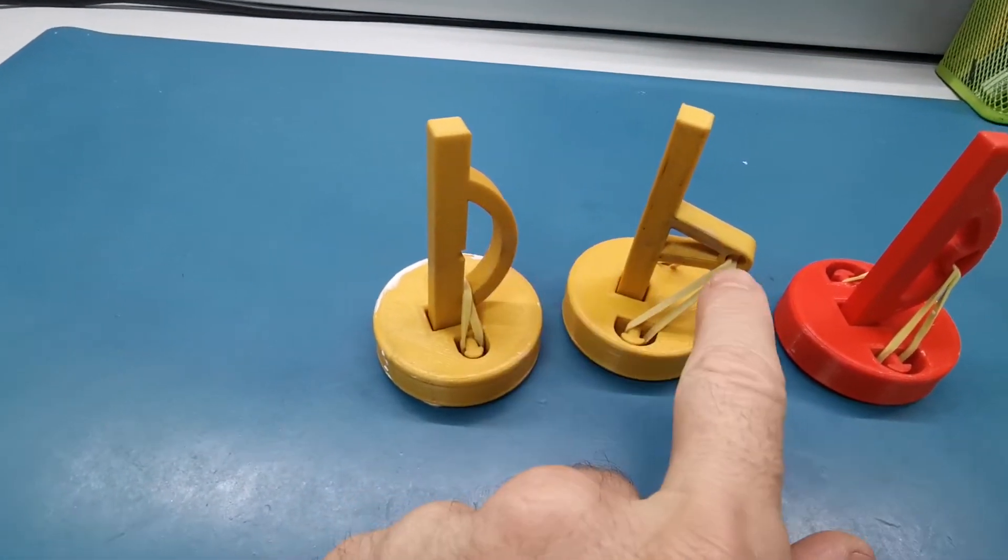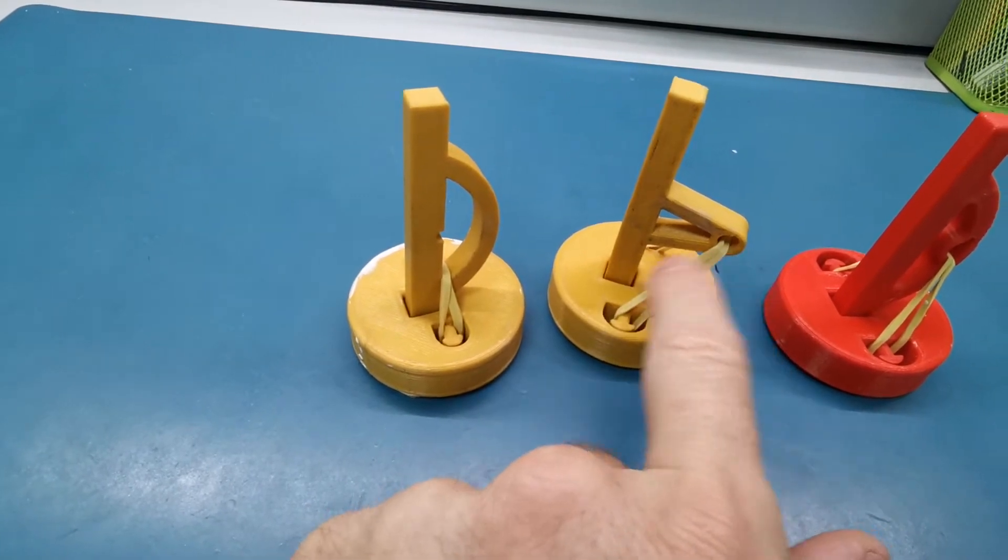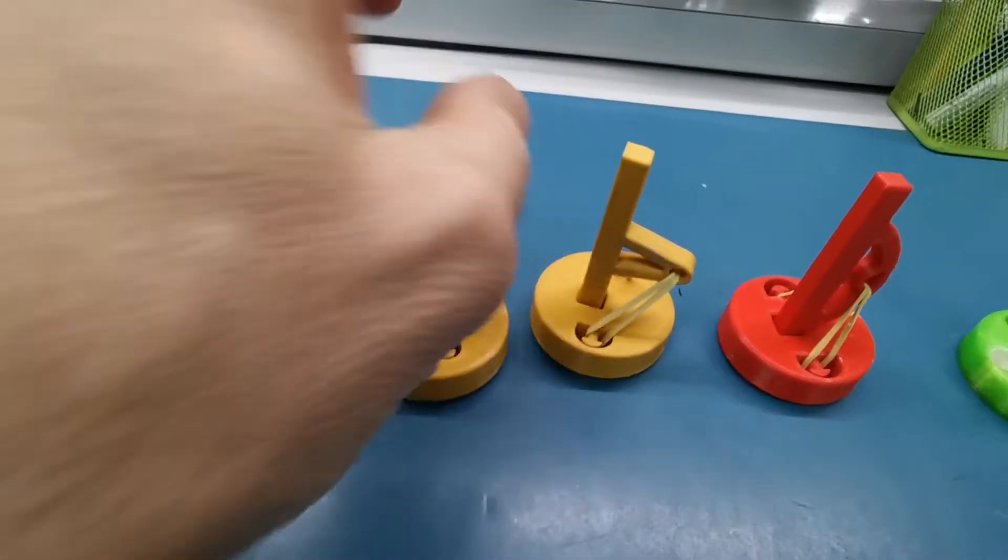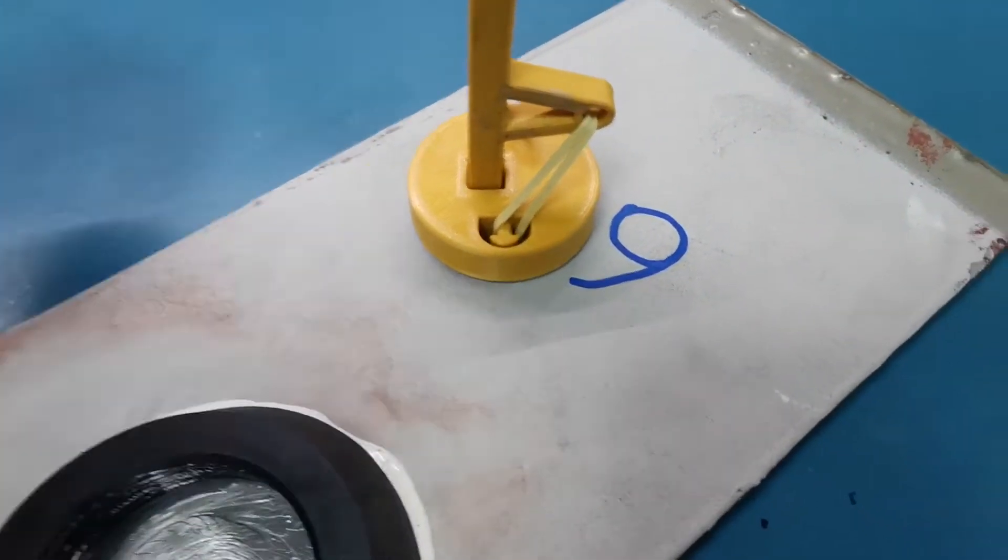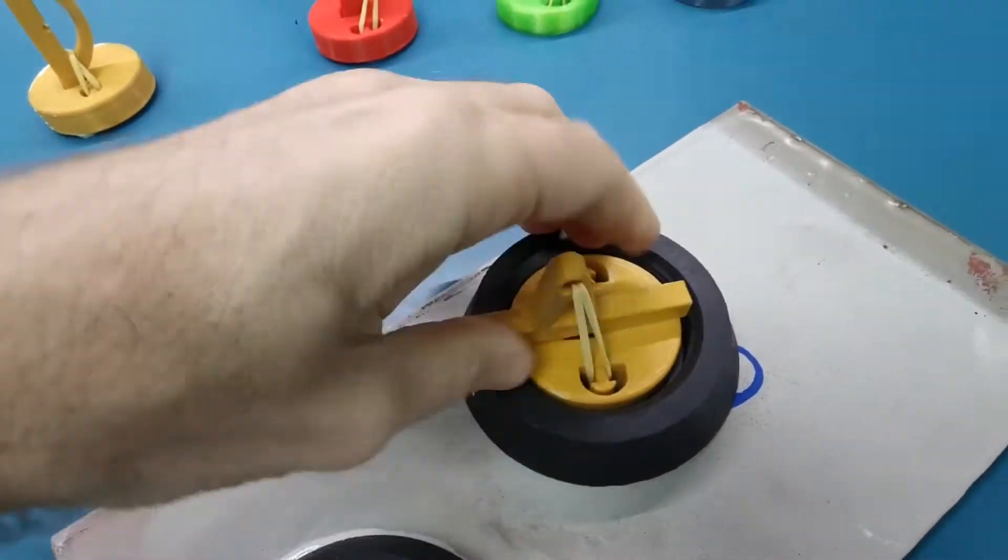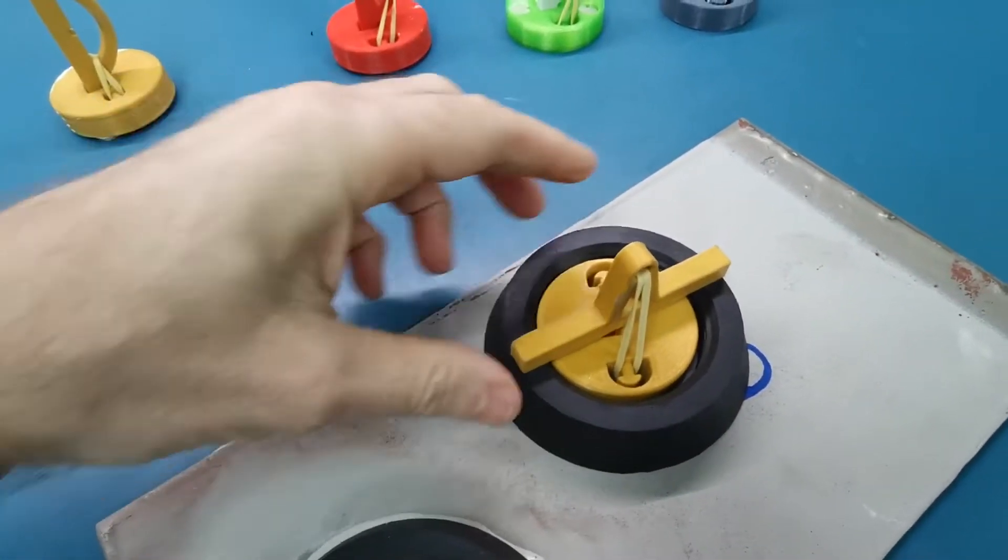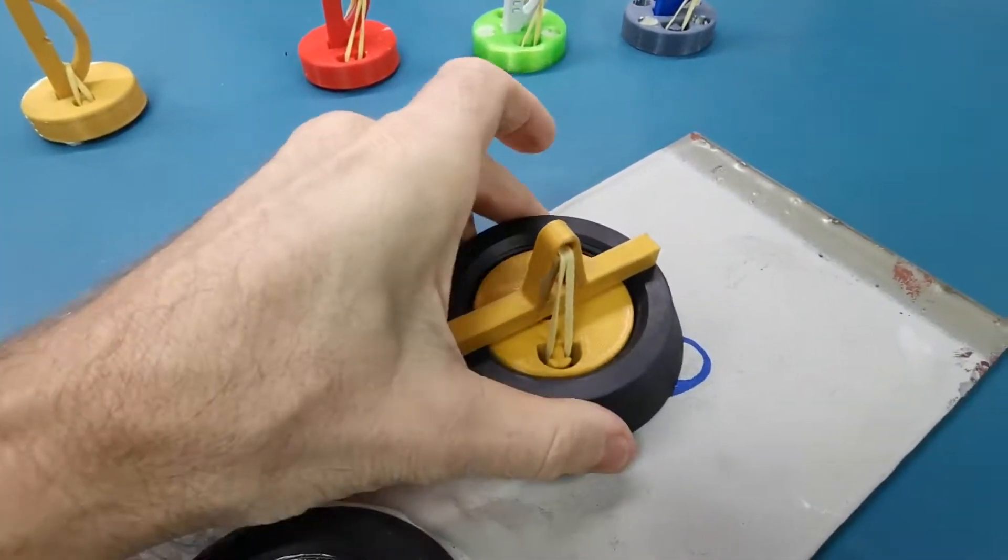I changed the shape of the handle so that the rubber band is taller and can put more pressure, so now it has more holding force to hold down on the ring.